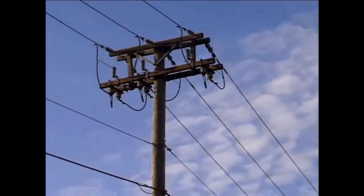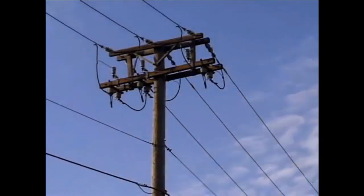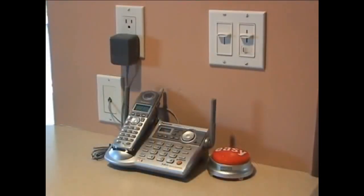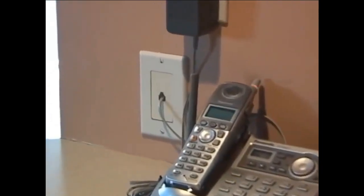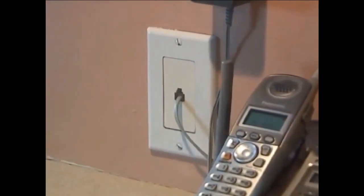I discovered a secret source of electricity that the power company and phone company don't want you to know about. It's also a great source of emergency electricity if your power ever goes out. All you need to tap into this secret power source is a phone line. Every phone line has between 40 and 70 volts running through it 24-7.